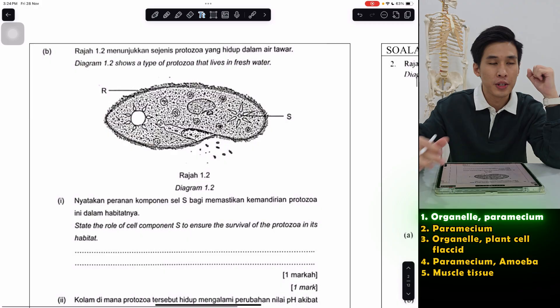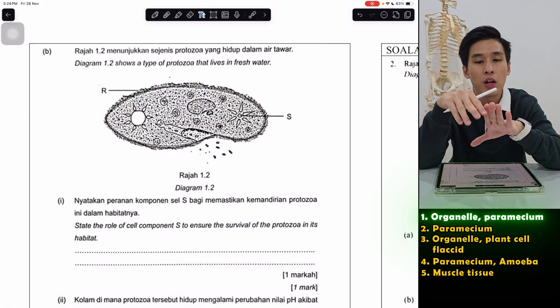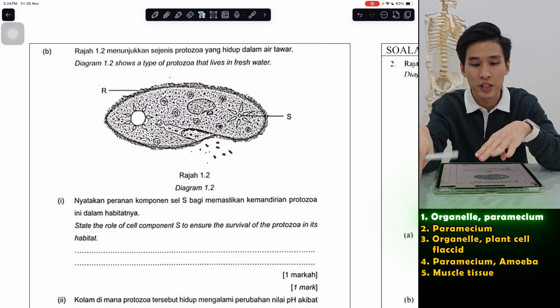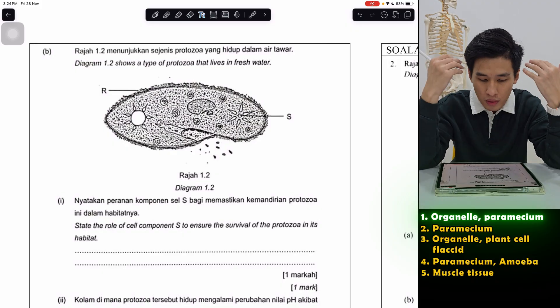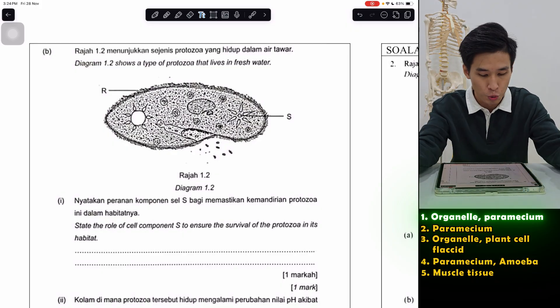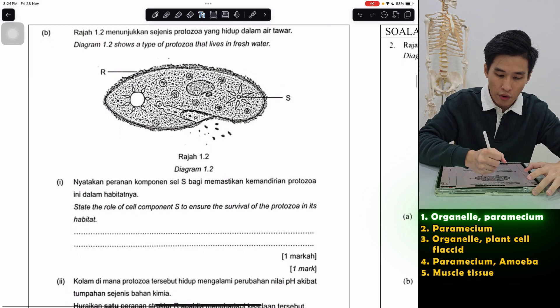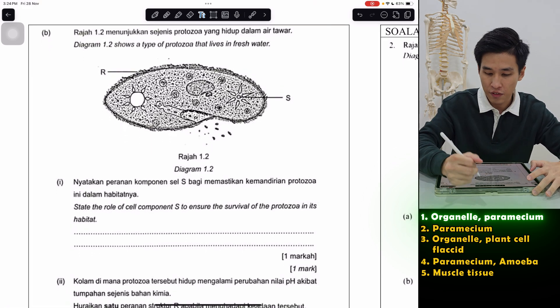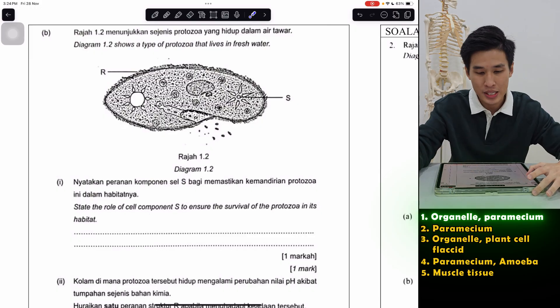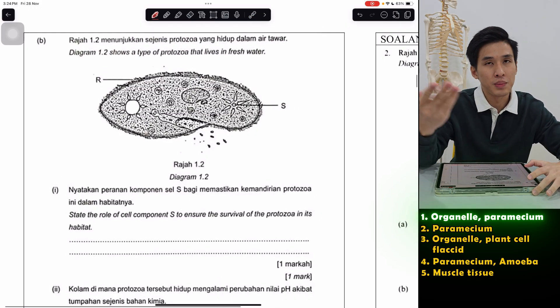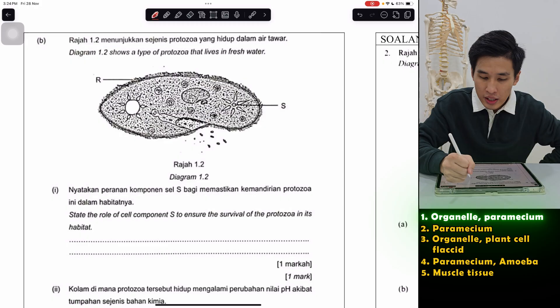Next, unicellular paramecium here. Now I find that this year, we have quite a lot of questions on unicellular organisms, especially on paramecium. Which is I think a very important thing you should know for this year SPM.